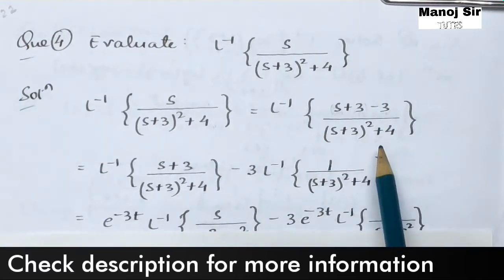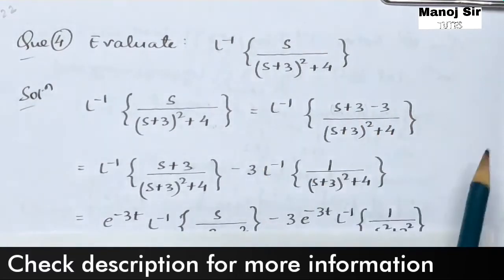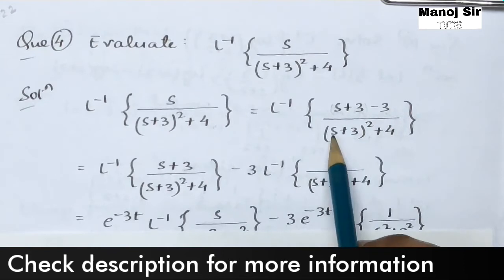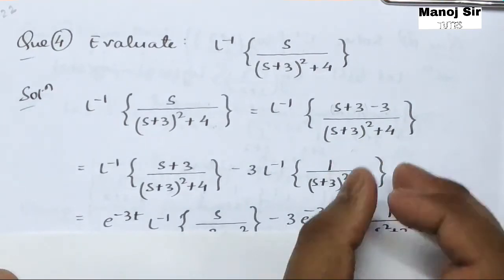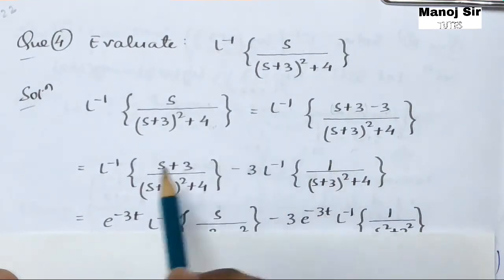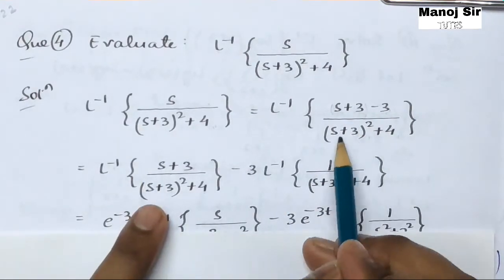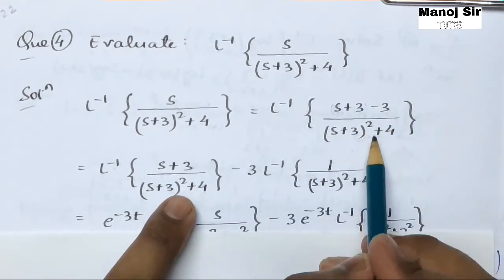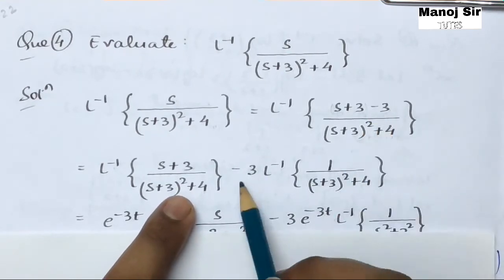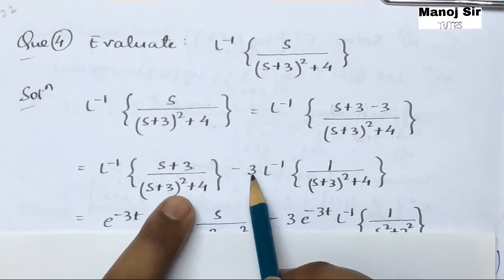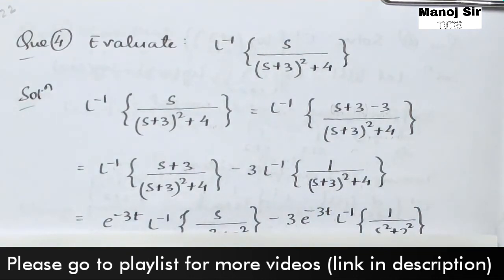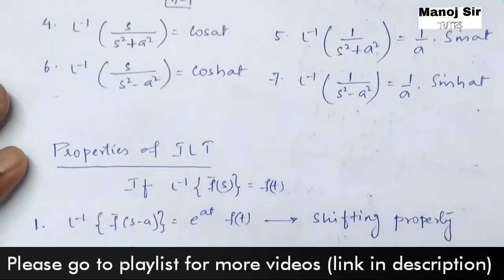We divide this into two different terms. The first will be (s+3) upon (s+3)² + 4, and the second will be −3 upon (s+3)² + 4. Since −3 is a constant value, we take it outside, giving inverse Laplace transform of (s+3)/[(s+3)² + 4] minus 3 times inverse Laplace transform of 1/[(s+3)² + 4].